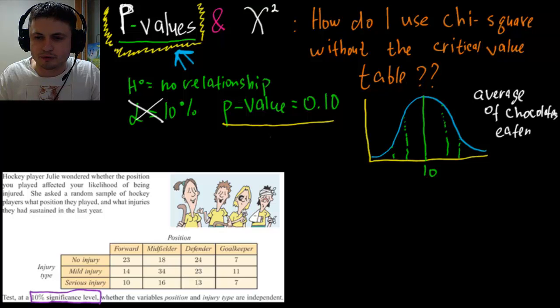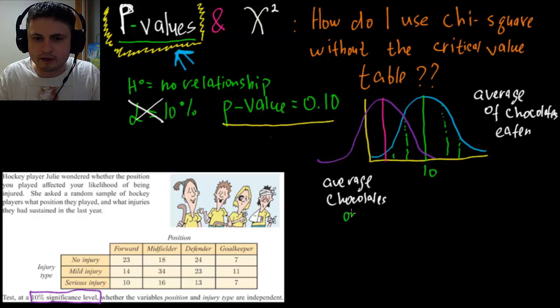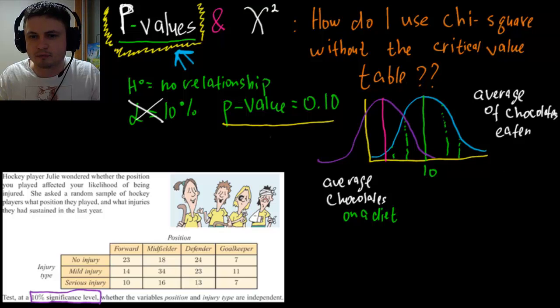And let's just say this represents the number of chocolates you eat per week. So this is number of chocolates eaten. And then we're going to make another normal distribution graph with another mean right here. And this distribution graph is going to represent a slightly different value: average chocolates when you're on a diet. And here what you would maybe want to find out is, is there a difference between how many chocolates you eat when you're on a diet or not?